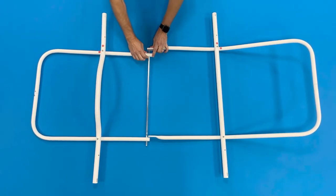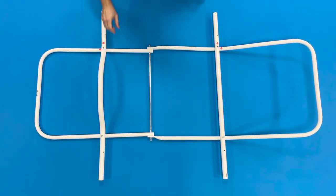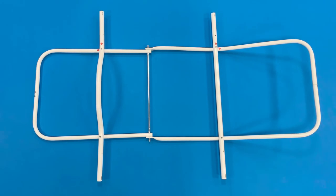Attach the ends of the seat frame over the aluminum rod. Congratulations! Your fully assembled seat frame is complete.